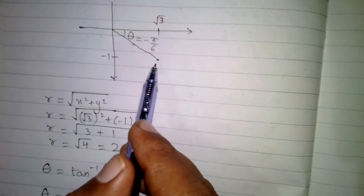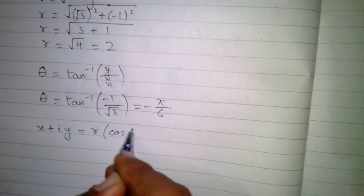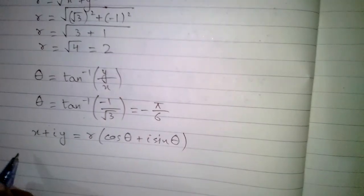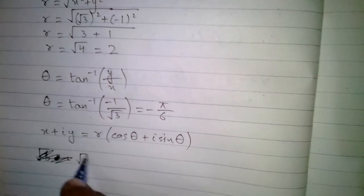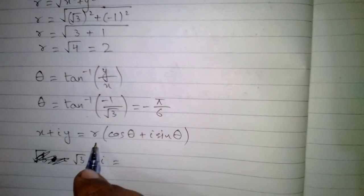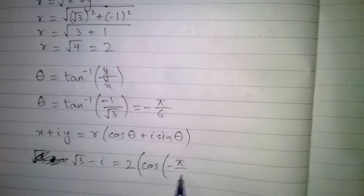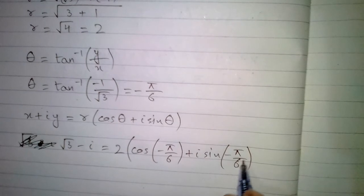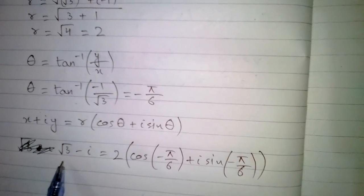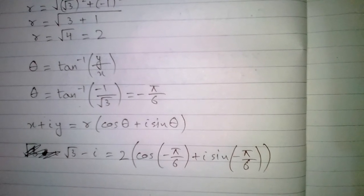Any complex number x plus i·y can be expressed in polar form as r(cos θ + i·sin θ). So the complex number √3 minus i equals 2(cos(−π/6) + i·sin(−π/6)). This is the polar form of the complex number √3 minus i.